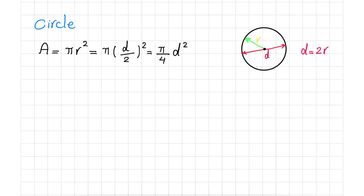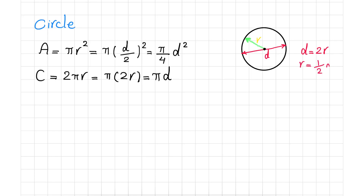The area of the circle can be written in terms of radius or diameter. The circumference of the circle — the distance around the circle — is 2 pi R, or equivalently pi times D, whichever you prefer to memorize. Always remember that D is the diameter, which is twice the radius, and R and D are the two important parameters of a circle.